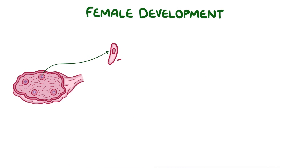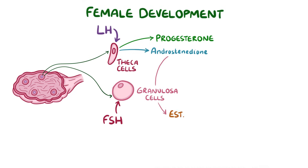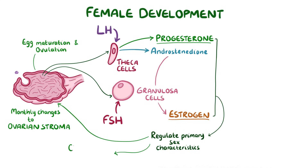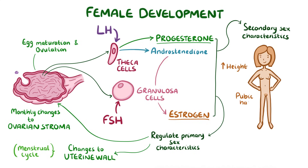In females, the theca cells respond to luteinising hormone by producing progesterone and androstenedione. Then, follicle-stimulating hormone causes the granulosa cells to convert androstenedione into oestrogen. During puberty, waves of oestrogen and progesterone regulate primary sex characteristics, like monthly changes to the ovary stroma to promote egg maturation and ovulation, and changes to the uterine wall lining as part of the menstrual cycle. They also direct secondary sex characteristic development, like increased height and growth of pubic hair and breasts.